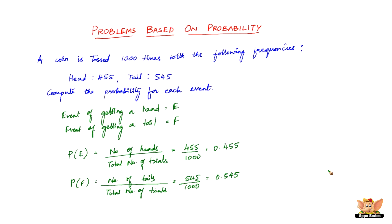Note that in both cases above, 0.455 plus 0.545 equals 1, which indicates that E and F are the only two possible outcomes of each trial. This means we haven't considered the possibility of the coin not showing a head or a tail — that is, the coin standing neutrally.